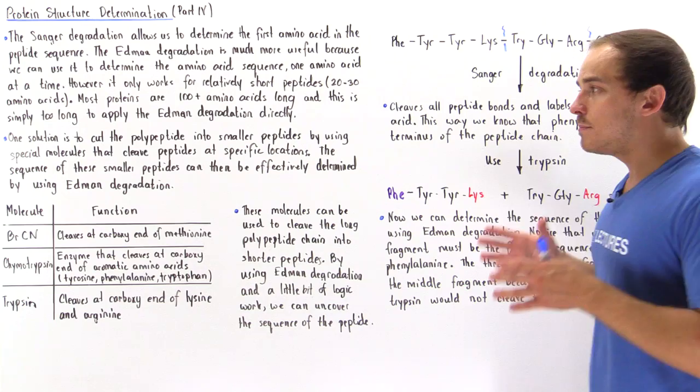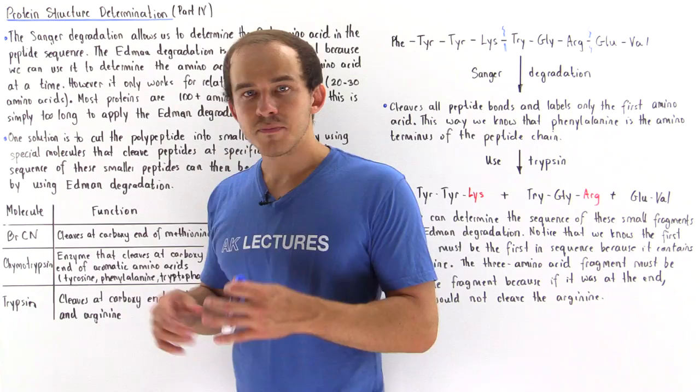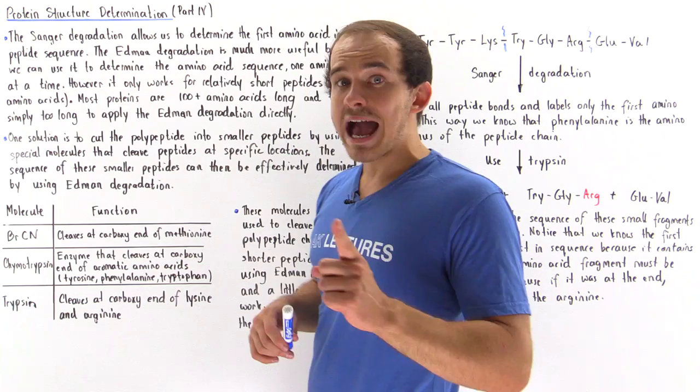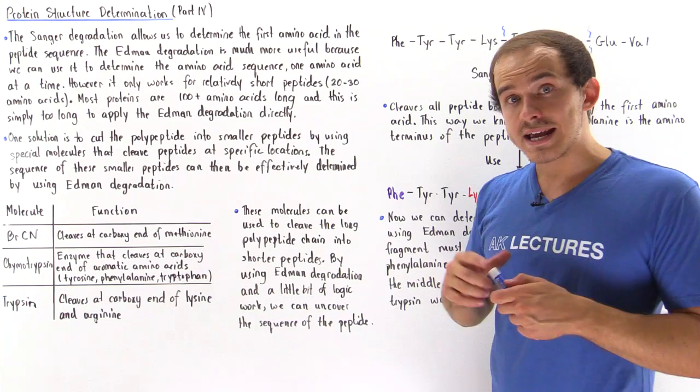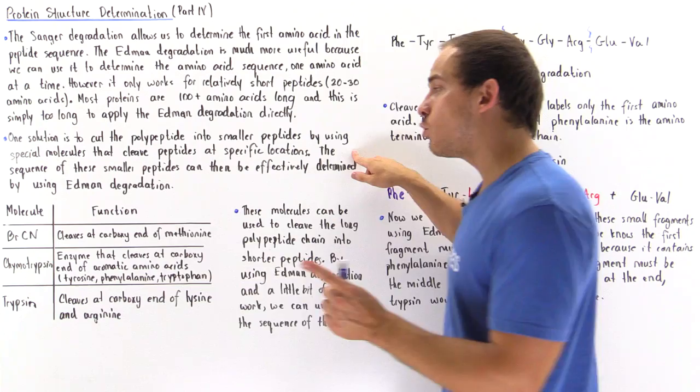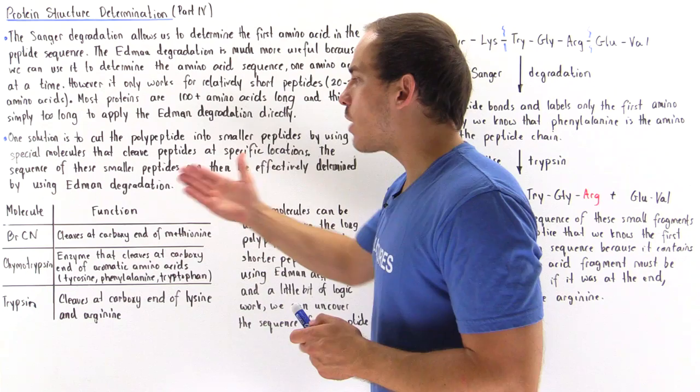To solve the problem of the protein being too long, one solution is to cut our polypeptide into smaller peptides by using special types of molecules that cleave or break the polypeptide at specific locations on that chain. The sequence of these smaller peptides can then be effectively determined using the Edmond degradation, because these peptides are now much smaller.